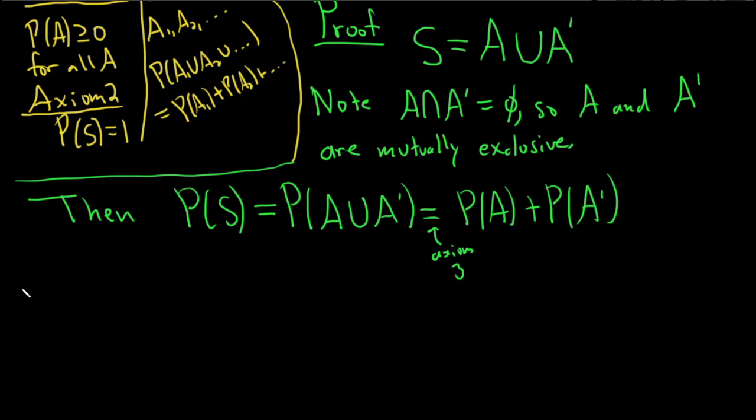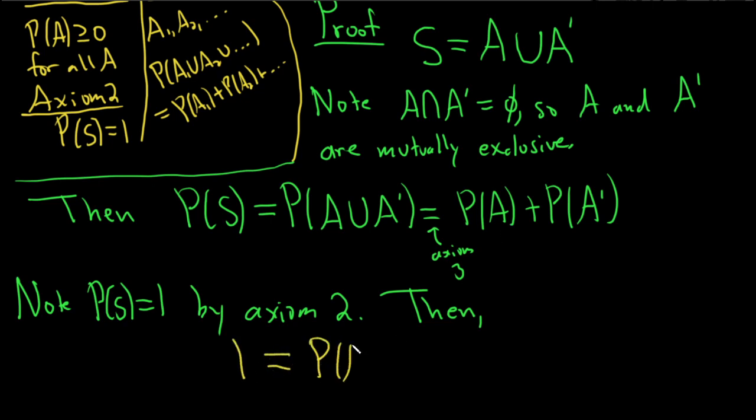Okay, so note that this probability of the sample space is 1 by axiom 2. So now what we'll do is we'll plug in the 1 into our equation here, and we should be good. So then, we have 1 equals P of A plus the probability of the complement of A.